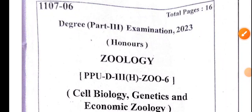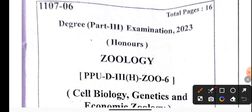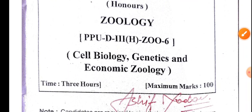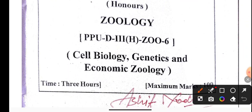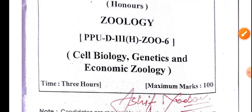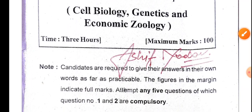We are going to discuss the BSE Part 3 question paper of Paper 6 that was held on 26th of April. This was Paper 6 of the subject Cell Biology, Genetics and Economic Zoology. We are going to discuss this in detail and will go through the objective solutions also in this lecture.